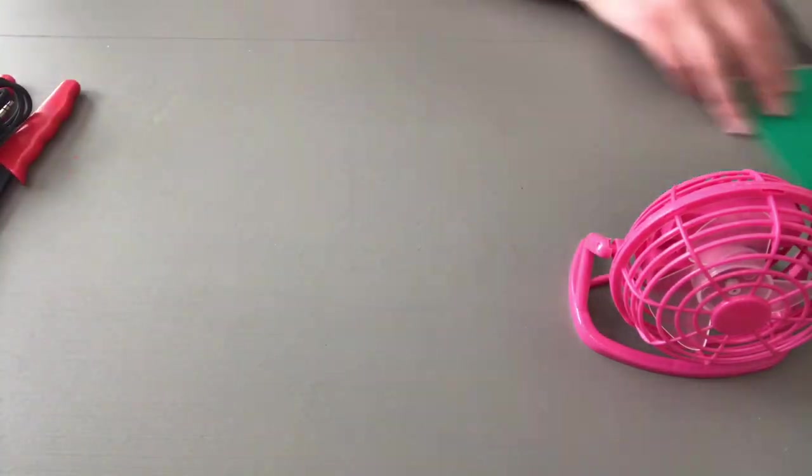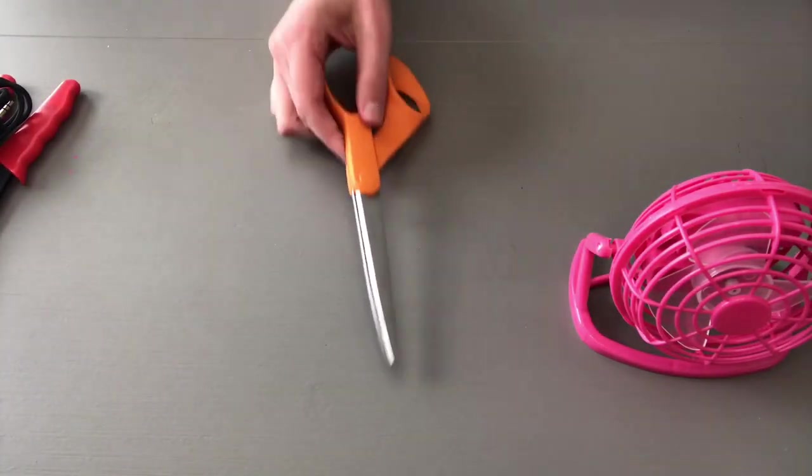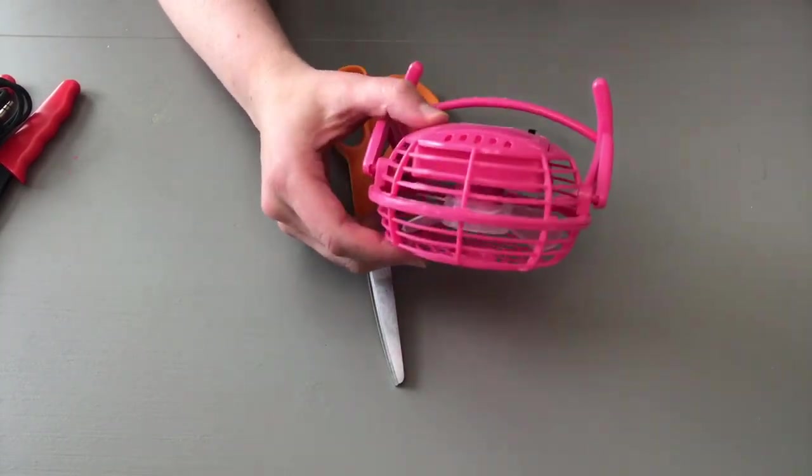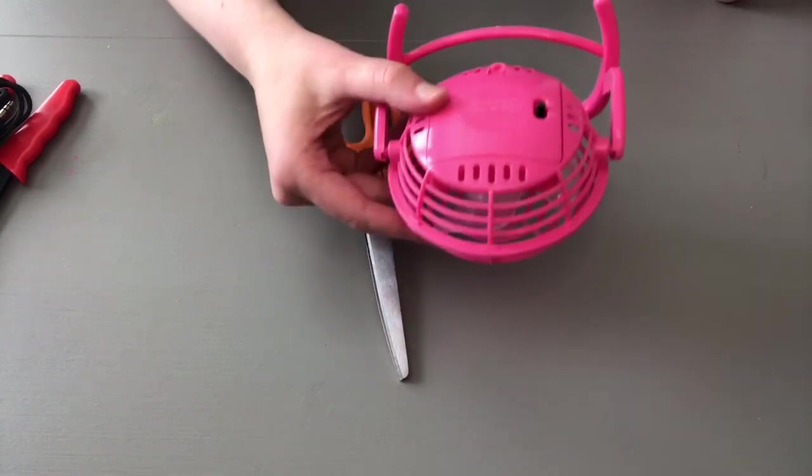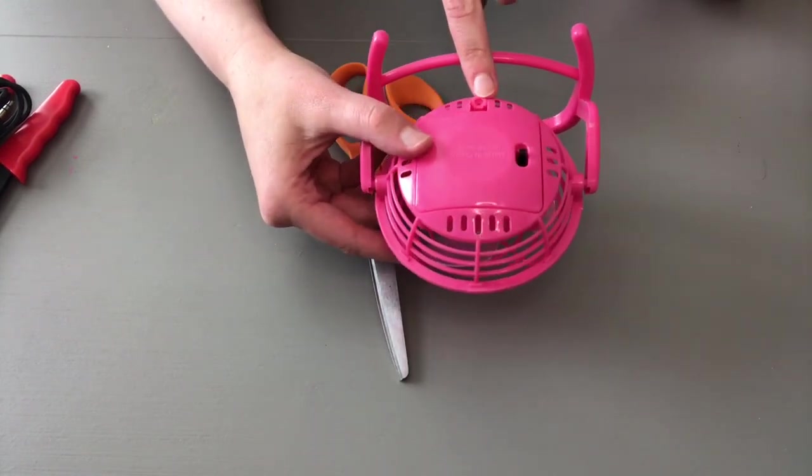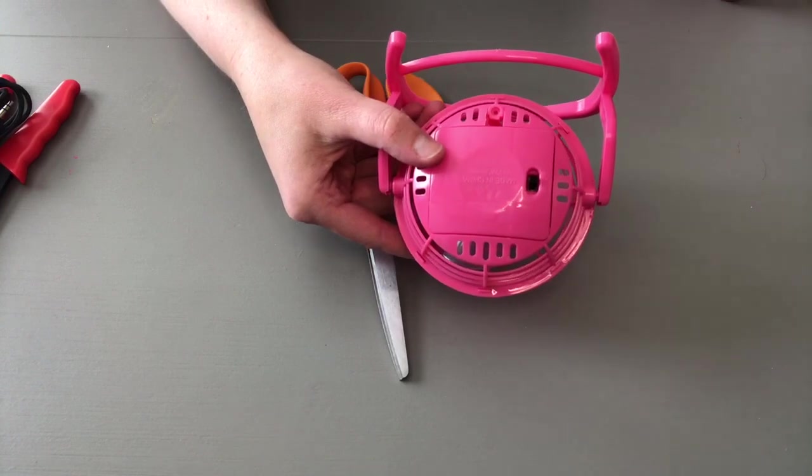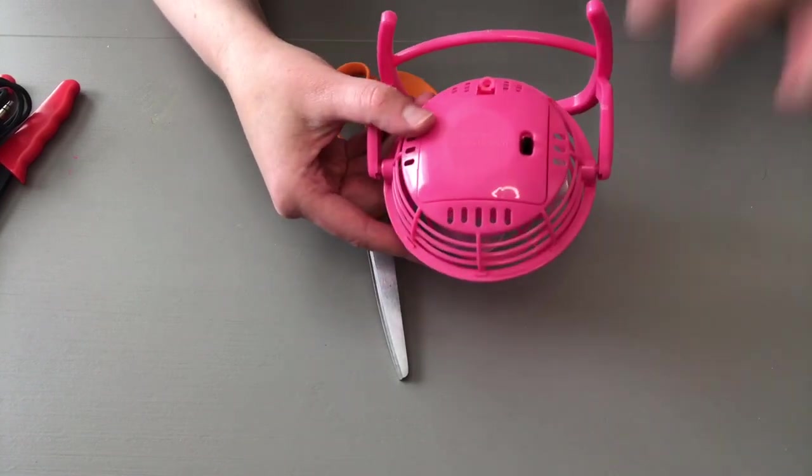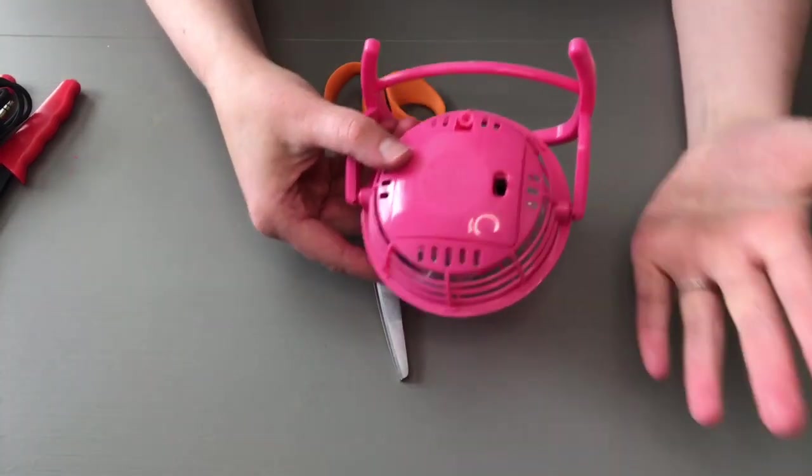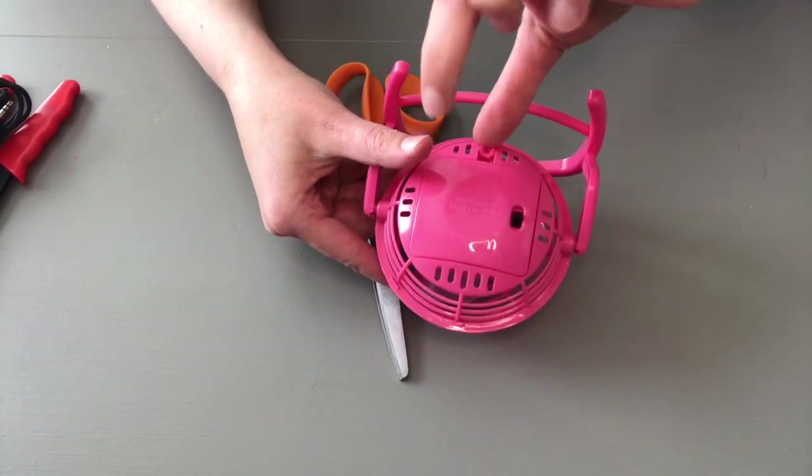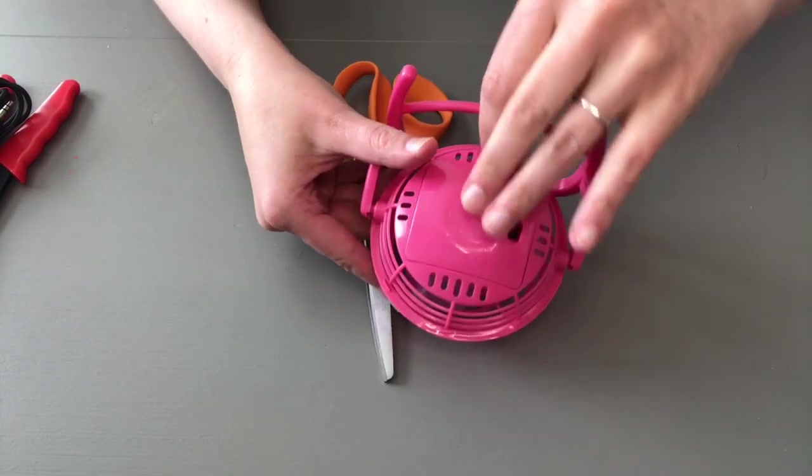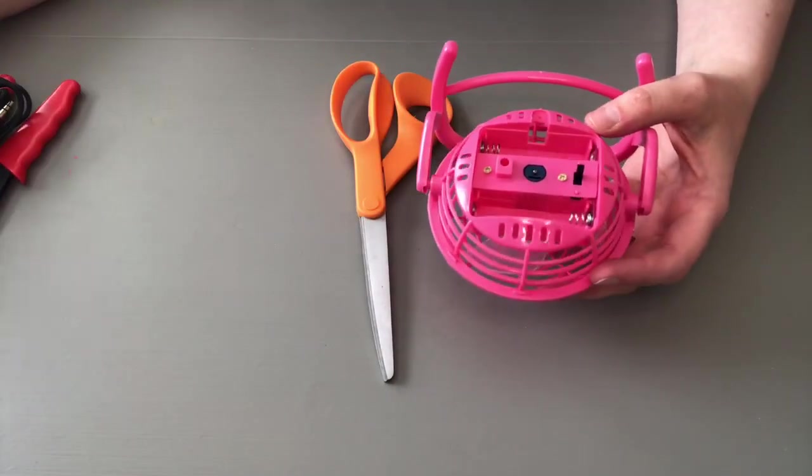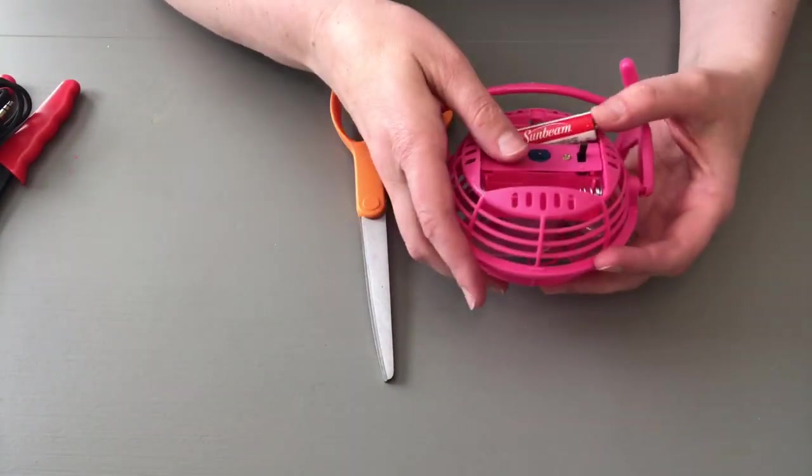You'll also need some scissors. This is a fan from Dollar Tree, and the first thing you have to do is undo a little screw in the back to get to the batteries. The reason I always check the batteries first is because if this device doesn't work, there's no point in switch-adapting it. The magic of TV, I went ahead and took this one out to save time. We're going to put our batteries in and test it to make sure it works.